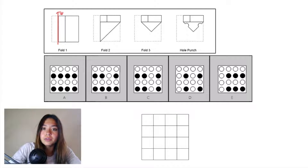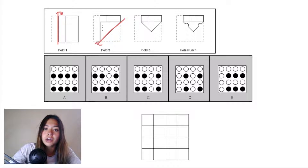In fold two we have a diagonal plane and we're folding this triangular piece in the bottom right corner up into this triangle right here.